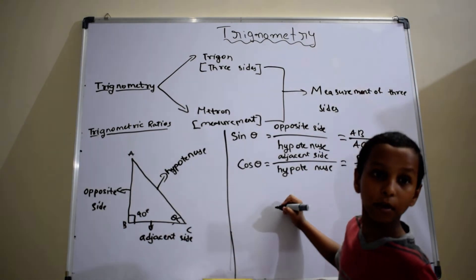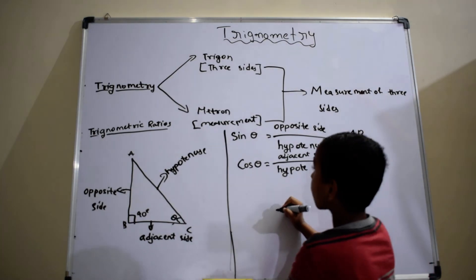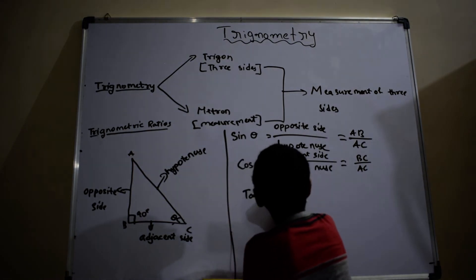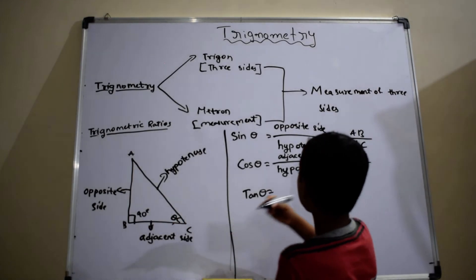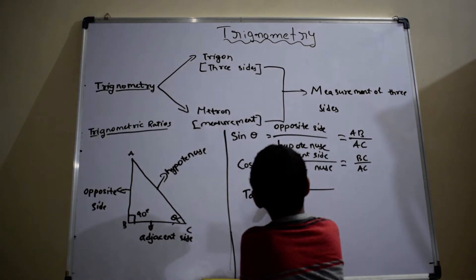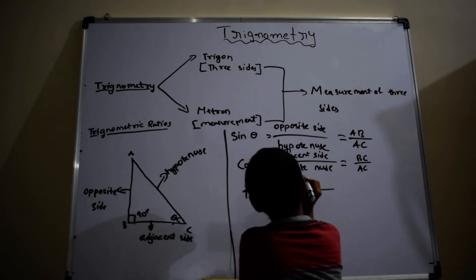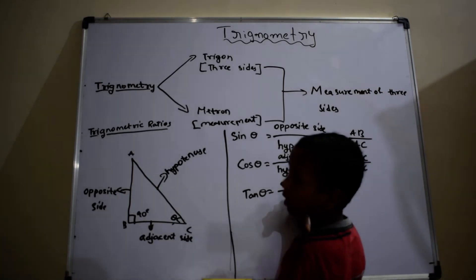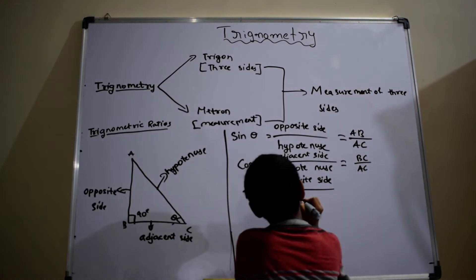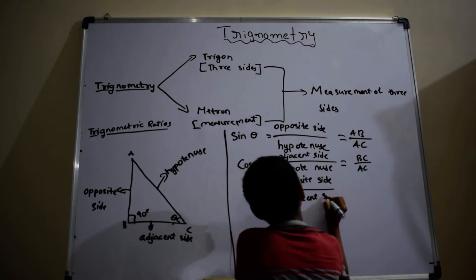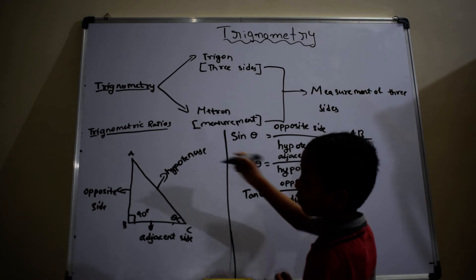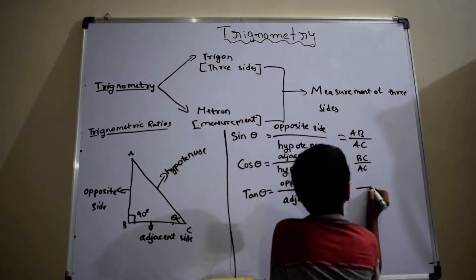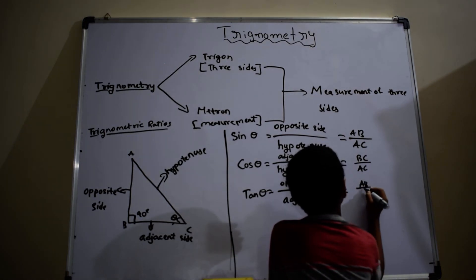The next ratio is tan theta, which is equal to opposite side by adjacent side, which is equal to AB by BC.